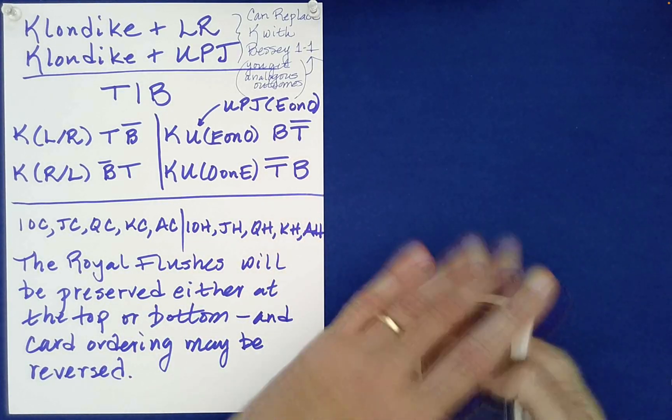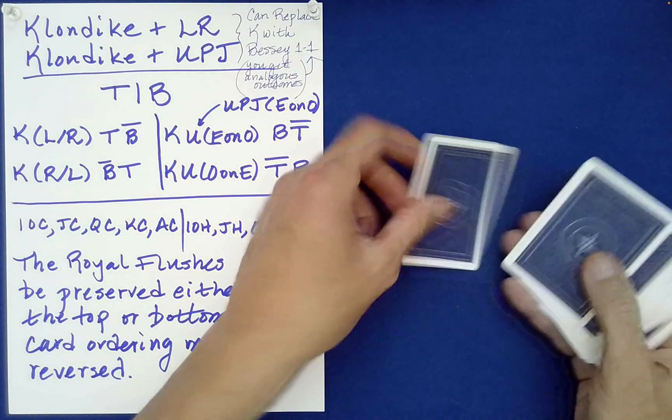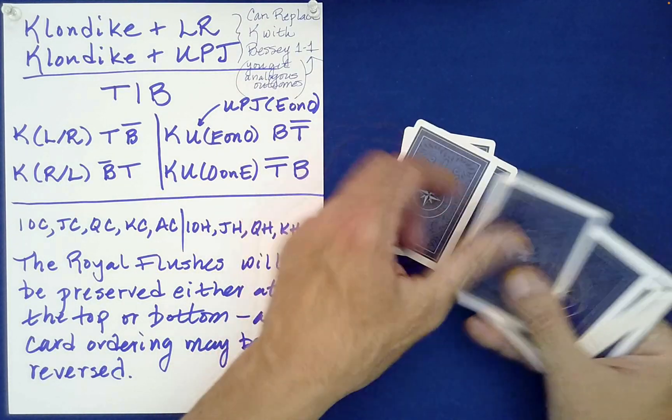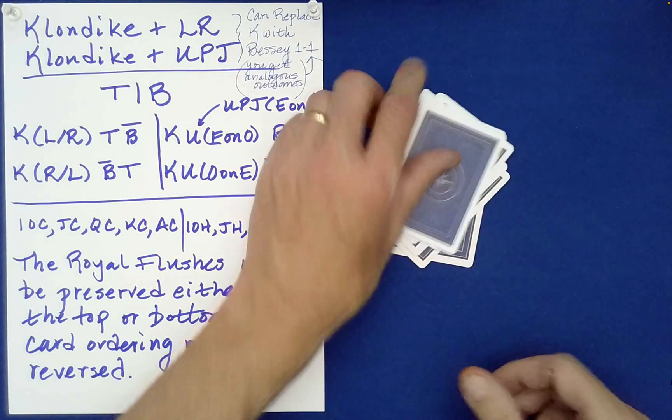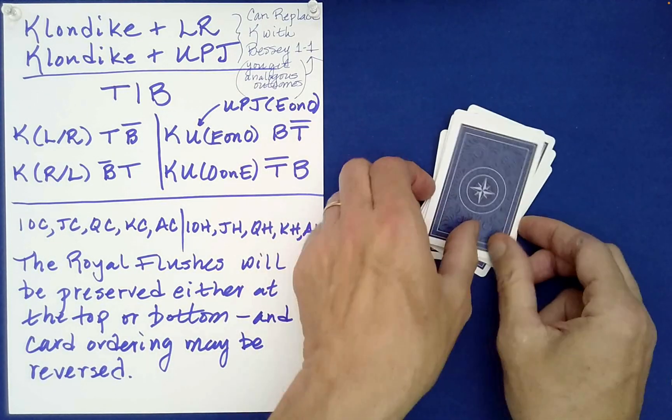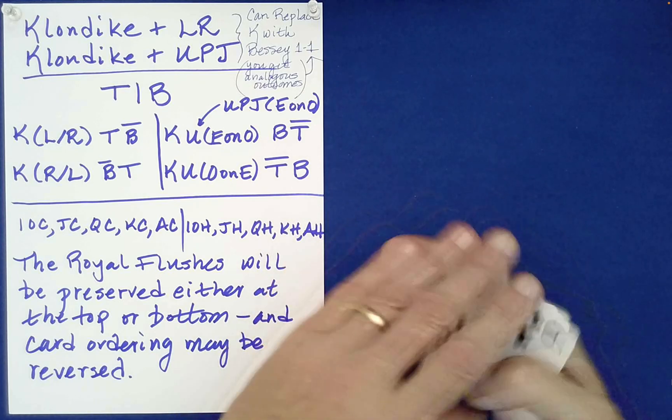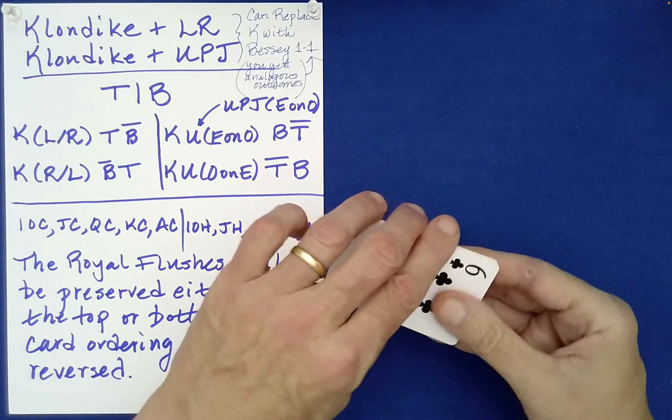So we can deal out eight of them — one, two, three, four, five, six, seven, eight. That also preserves these two blocks. We may move the blocks around and move the cards around within each block, but we're not so worried about that.